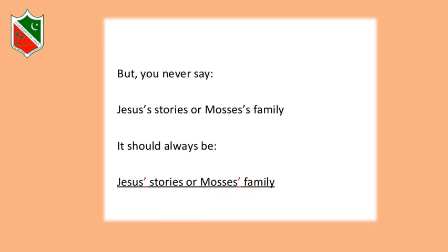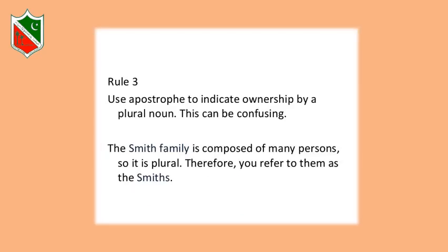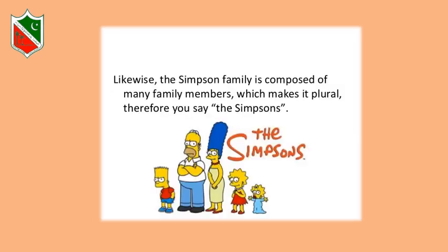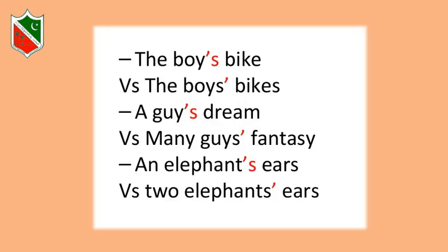Rule number three: use apostrophe to indicate ownership by a plural noun. This can be confusing. The Smith family is composed of many persons, so it is plural — therefore you refer to them as the Smiths. Likewise, the Simpson family is composed of many members, making it plural, so you say the Simpsons. We don't put an apostrophe before or after S when simply making a family name plural.